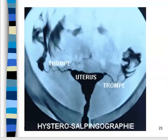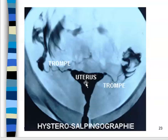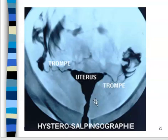Here's an image from France. The doctor has injected contrast into the uterus — it's nice and dark — and we see the uterine tubes, with spillage bilaterally into the peritoneal cavity. Perfect — that's what this is supposed to look like.